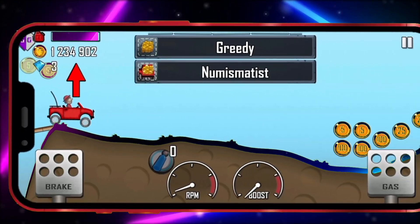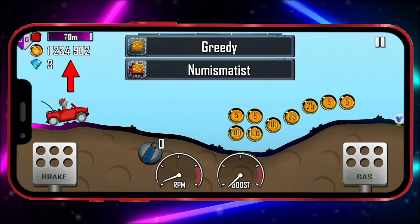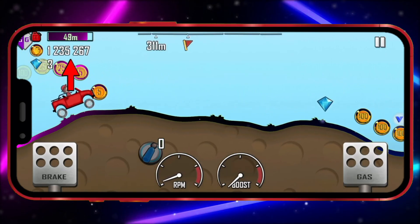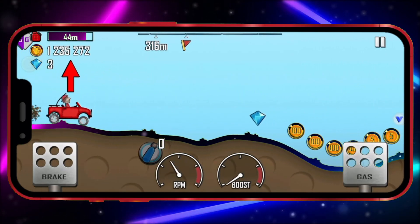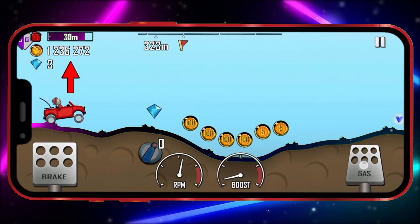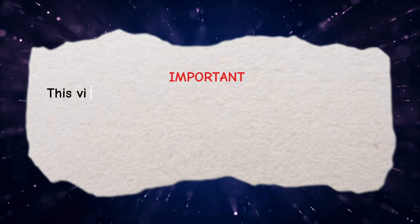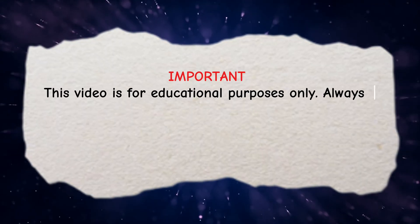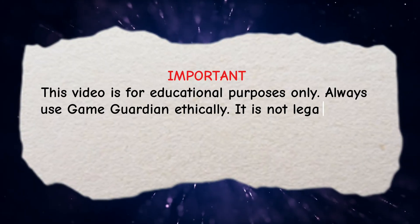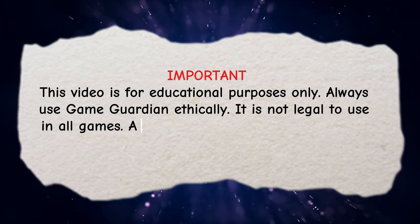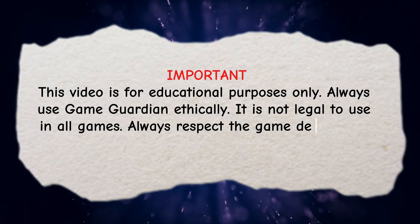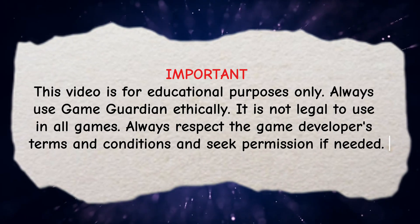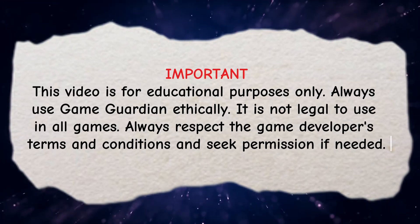Okay friends, this is how you install and use the latest official version of GameGuardian on a non-rooted Android device. One important thing to mention: this video is for educational purposes only. Always use GameGuardian ethically — it is not legal to use in all games. Always respect the game developer's terms and conditions and seek permission if needed.